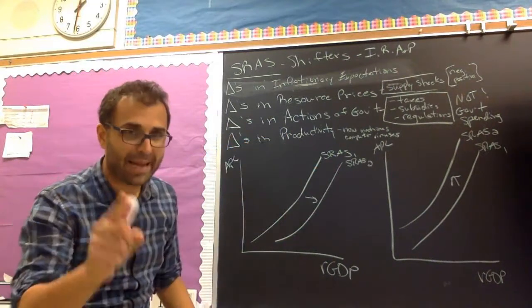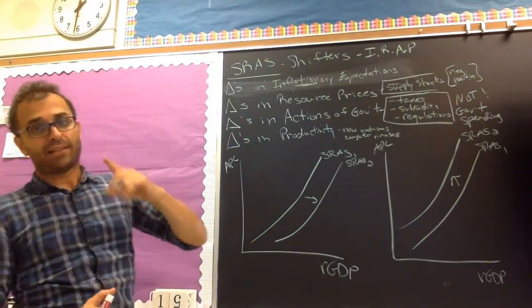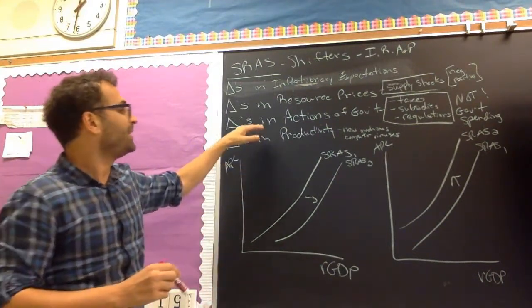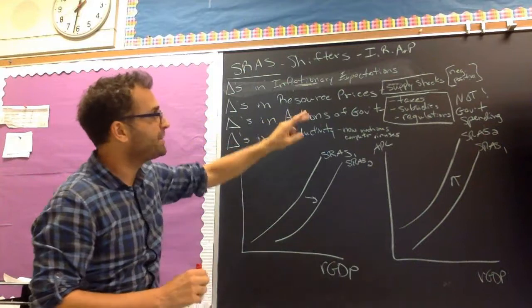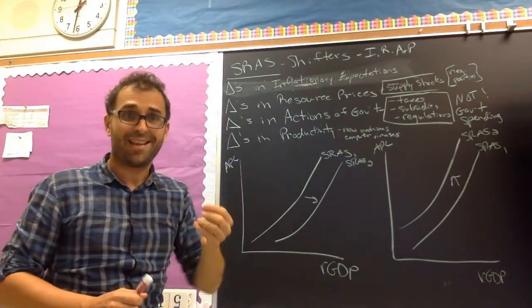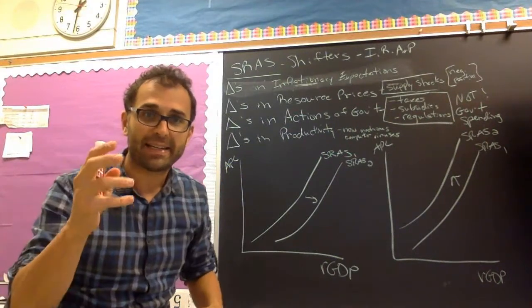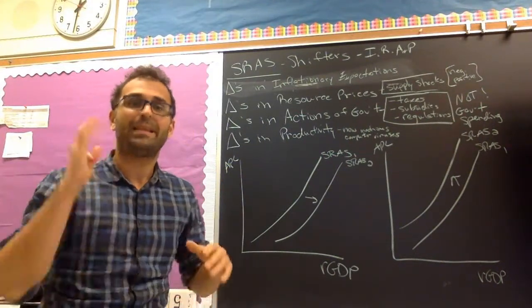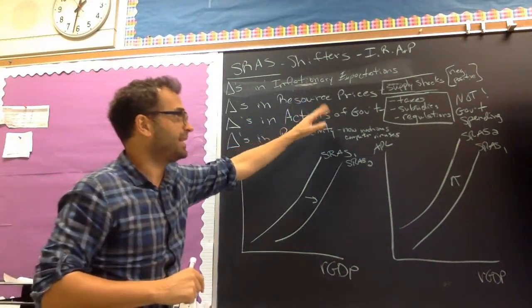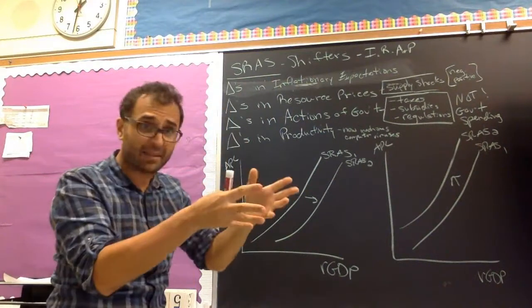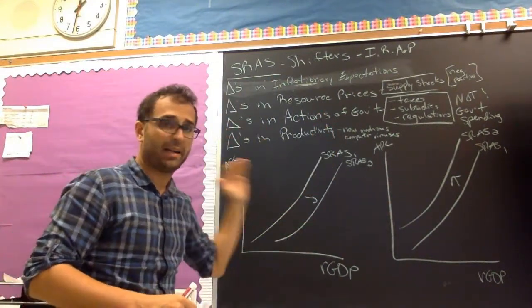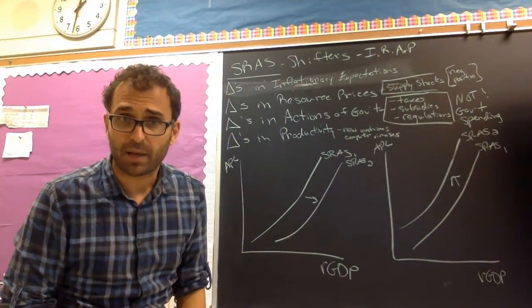Number three, change in government action. Pay attention. Government action is not the same as a government purchase. Yes, I know they're both actions by the definition of the word. But in this case, when we're talking about supply, a government action specifically means taxes, subsidies, or some type of regulation, not government spending. If government spending increases, and you see that on an exam, that means AD is shifting. In this case, if the government puts a tax on you, subsidizes, so they tax something, it's going to be supplied to the left. If they subsidize something, supply to the right. Just like when we did the regular supply curve back in Unit 1.